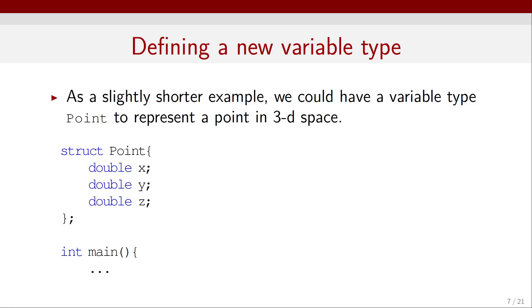Now, here's another slightly shorter example. We could have a variable type that we can call Point, that can represent a point in 3D space. So, we declare a structure and call it Point, and it consists of a double number x, another double y, and another double z. Obviously, this describes the Cartesian coordinates of that point.